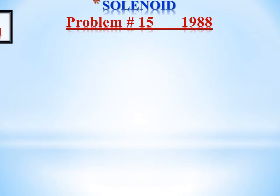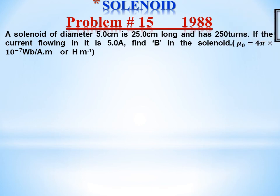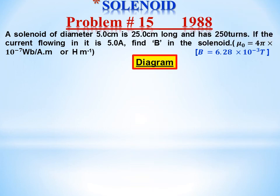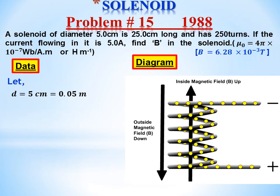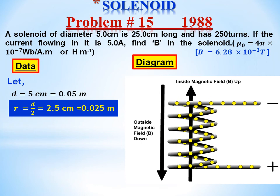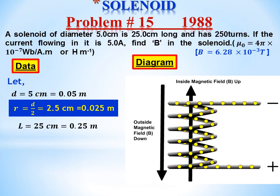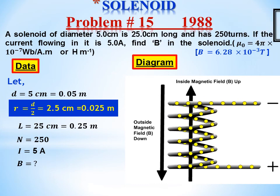Problem number 15 (from 1988): A solenoid of diameter 5 cm, 25 cm length, and 250 turns — if the current flowing in it is 5 ampere, find the magnetic field. Data: diameter = 5 cm = 0.05 m, so radius = 0.025 m; length = 25 cm = 0.25 m; number of turns N = 250; current I = 5 A. Find B.